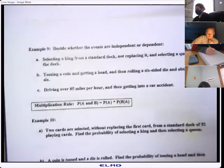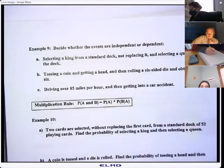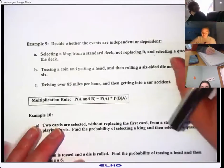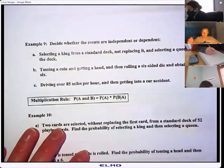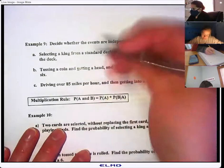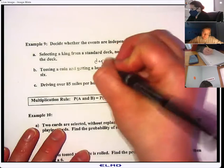Example nine. Decide whether these are independent or dependent. All right, we're just going to go through these wicked fast. Selecting the king from a standard deck, not replacing it, selecting a queen from the deck. Those are dependent because you didn't replace it.